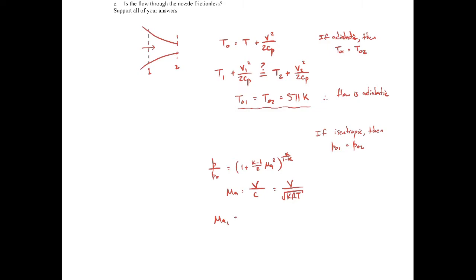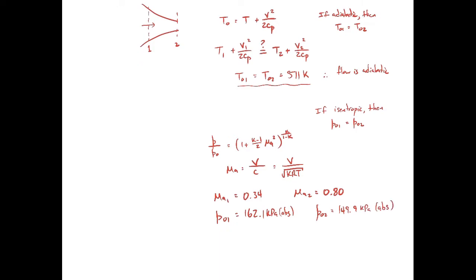When we plug in the numbers, the Mach number at one comes out to be 0.34. The Mach number at two comes out to be 0.8. When we calculate the stagnation pressure at point one, it's about 162.1 kilopascals absolute. P naught two comes out to be 149.9 kilopascals absolute. P naught one is not equal to P naught two, so therefore the flow is not isentropic.